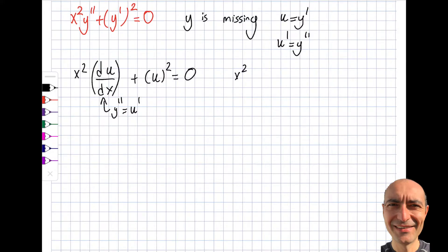x squared du/dx is equal to minus u squared, so I get myself, if I move this, minus du by u squared will be equal to dx by x squared. Then I take the integral of both sides, so this will be minus, minus, plus, well, let me do a shortcut.